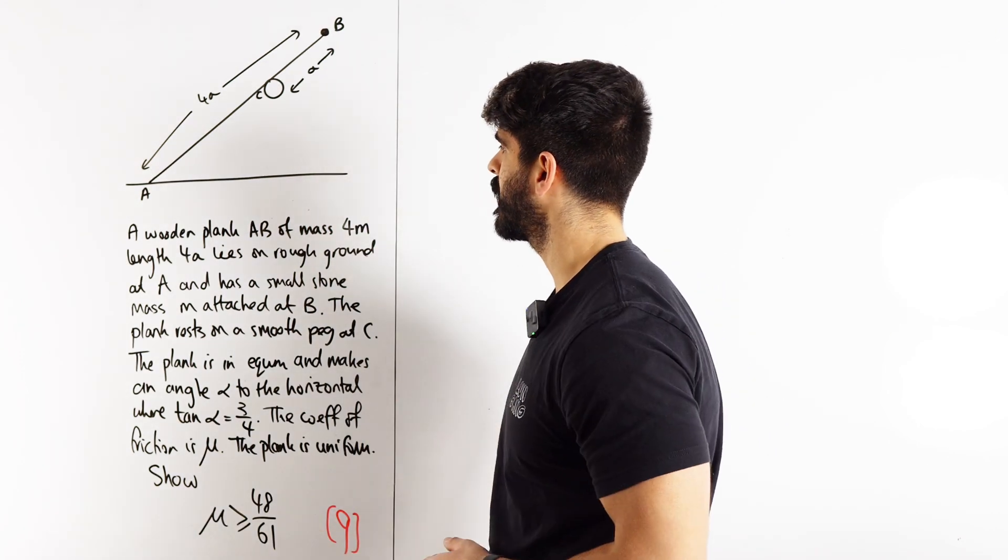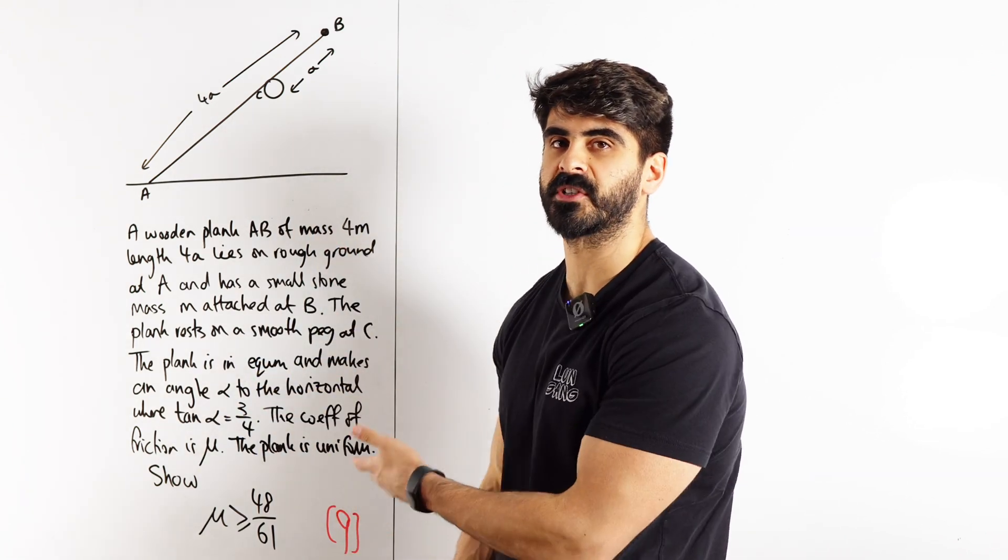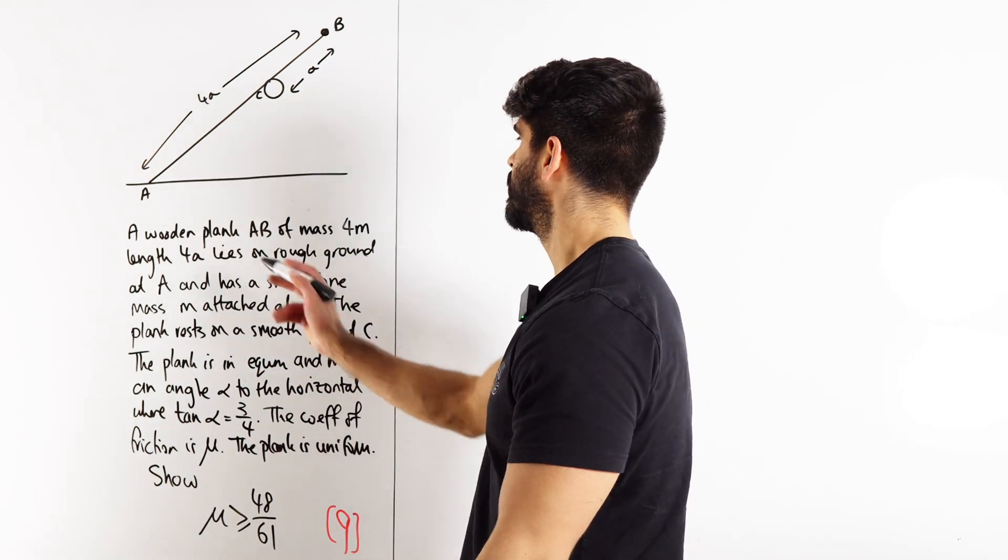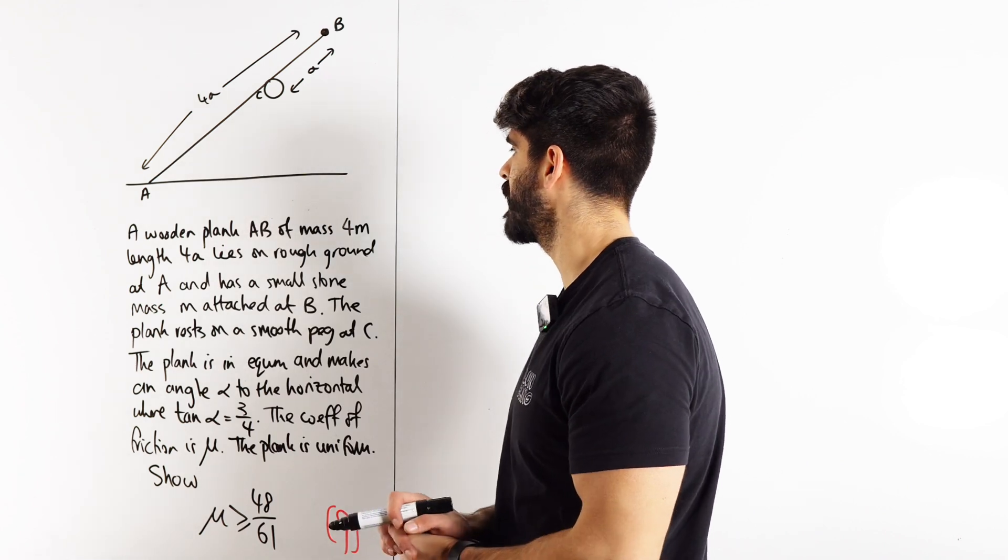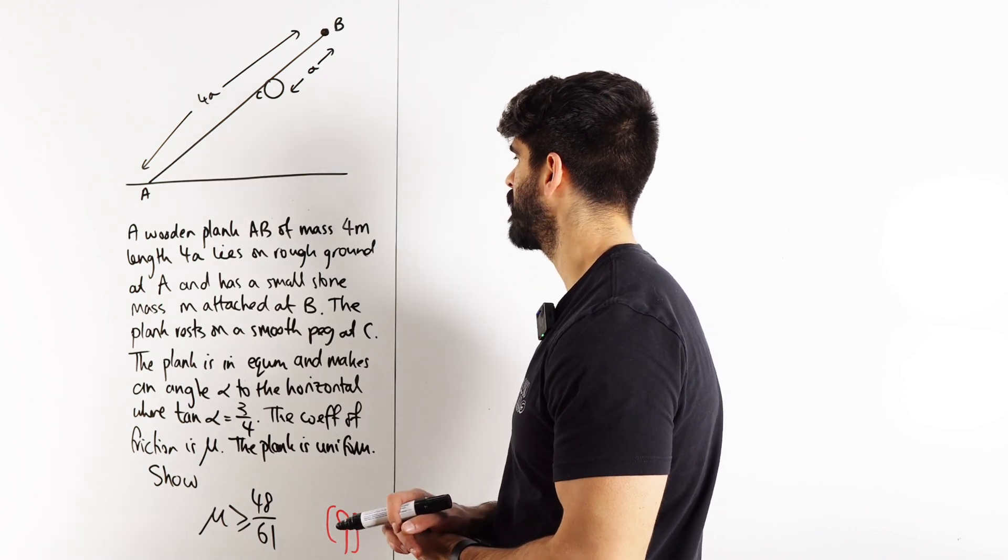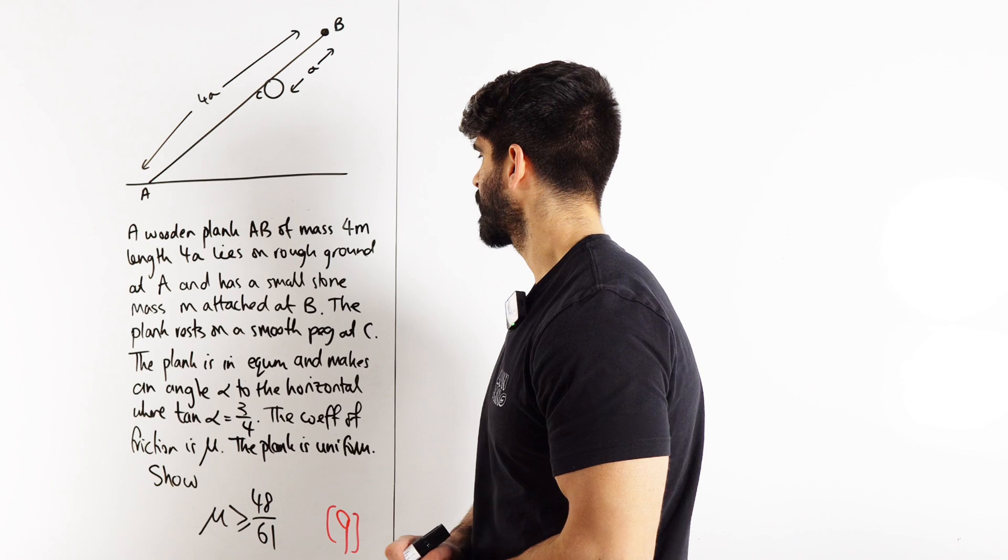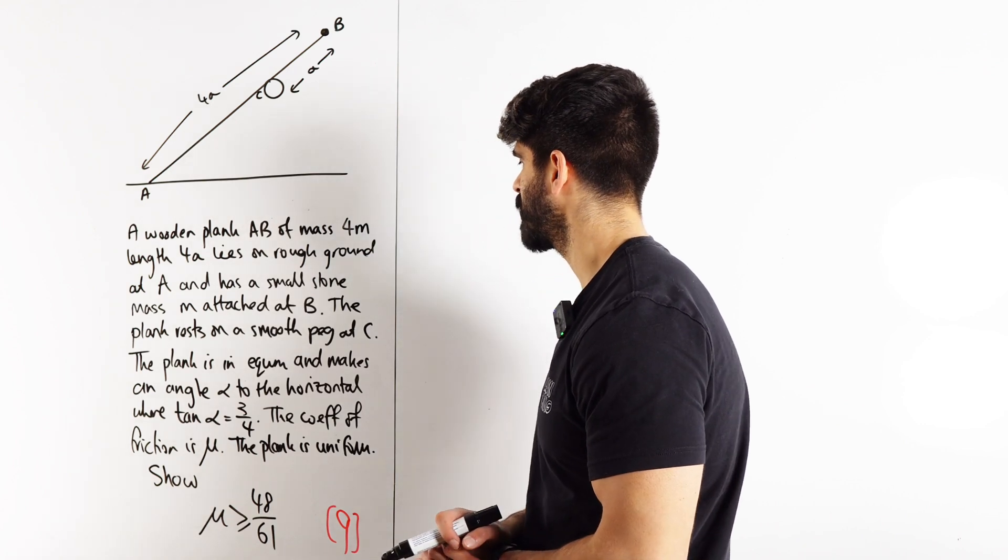So it says a wooden plank AB. Of course, their essay was a lot longer. I've just summarized what they were saying. A wooden plank AB of mass 4M length 4A lies on a rough ground at A and has a small stone mass M attached at B.